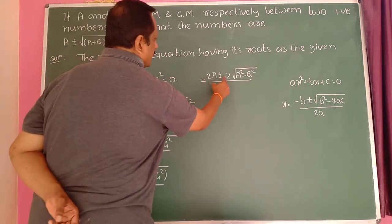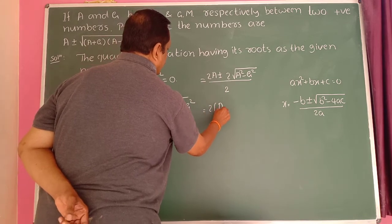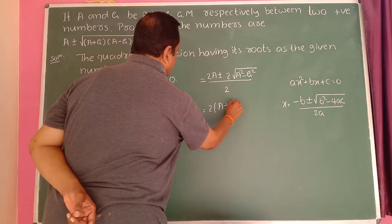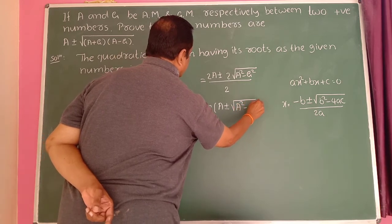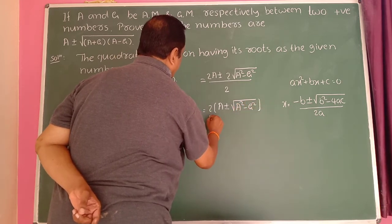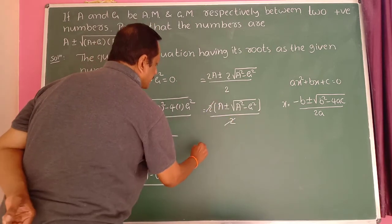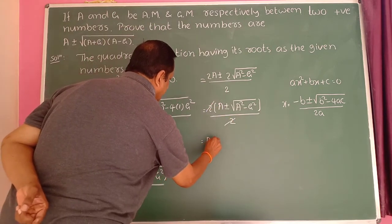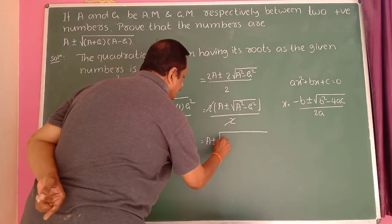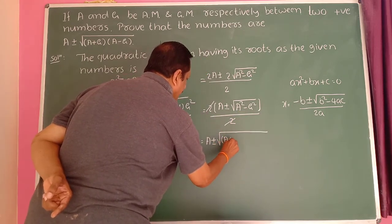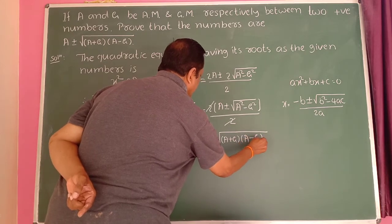The 2 in numerator and denominator cancel. Therefore the roots are A ± √(A² − G²), and since A² − G² = (A+G)(A−G), the numbers are A ± √(A+G)(A−G). This completes the proof.